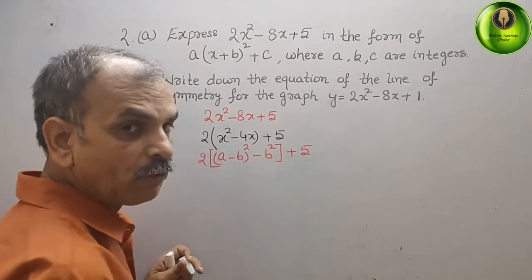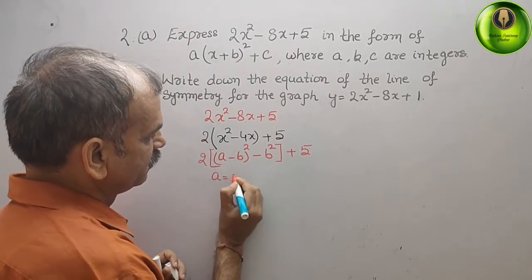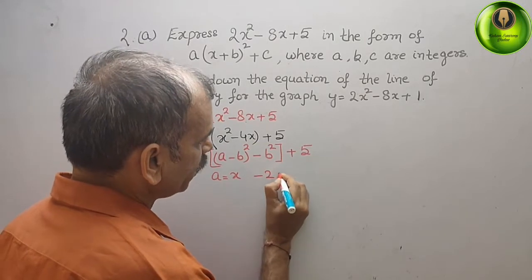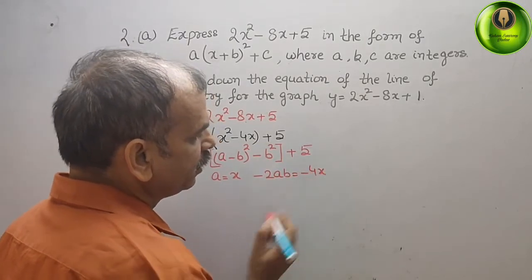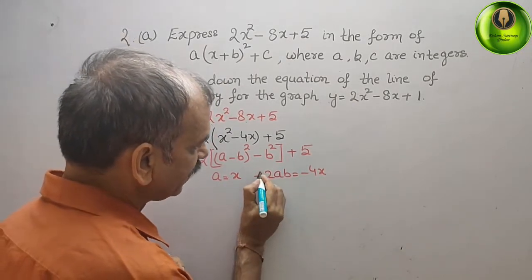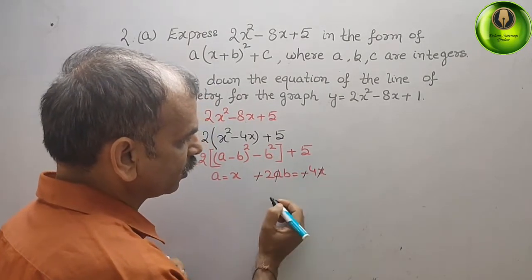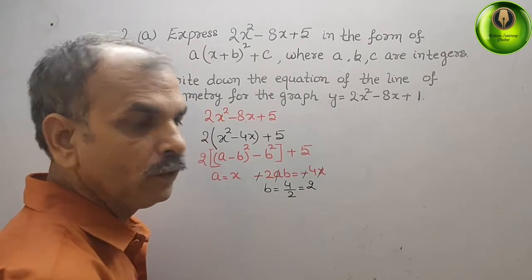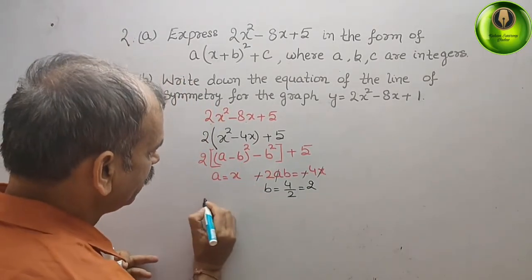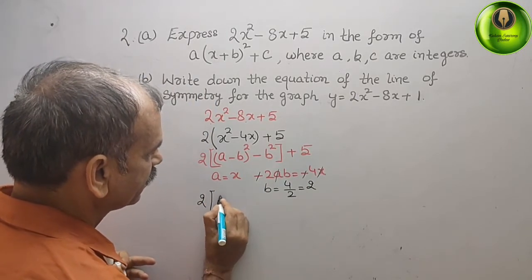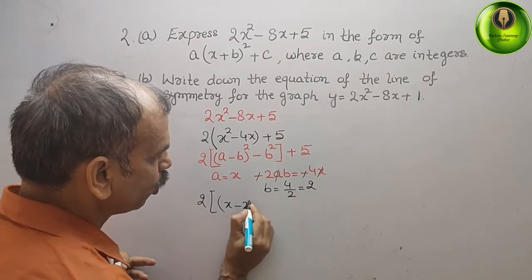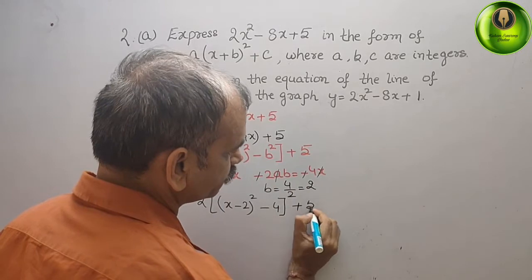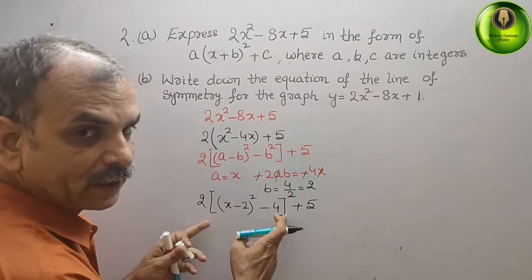We can see that a is x, and the minus 4x term is your minus 2ab. Since a is x, the minus signs and x cancel, so b equals 4 divided by 2, which is 2. Writing it in this form we get 2 times (x minus 2)² minus b², that means minus 2² which is 4, plus 5.